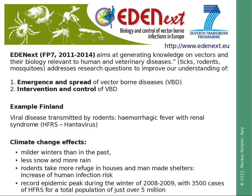Disease spread is a specific geographical problem requiring the use of GIS. As an example from Finland, we are studying the Puumala virus spread, which causes hemorrhagic fever with renal syndrome in humans. It is affected by climate change — milder winters, less snow, and more rain — which leads to rodents taking refuge in houses and man-made shelters, hence increasing human infection risk.